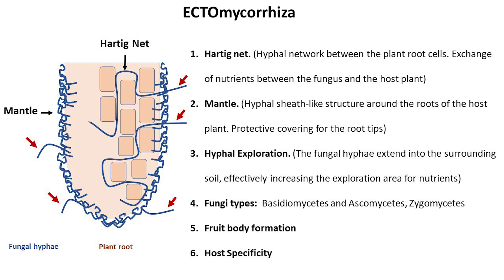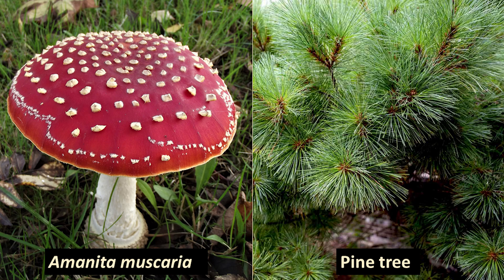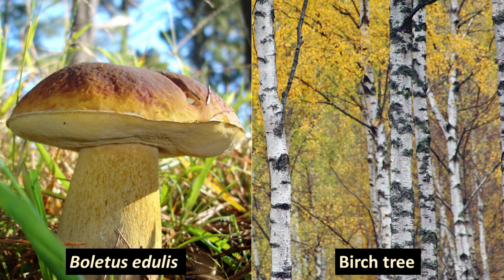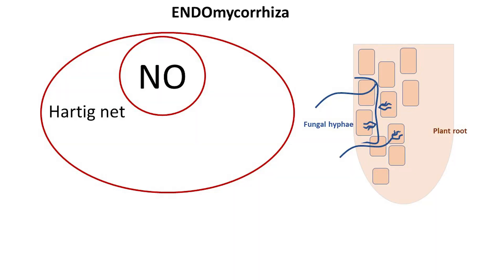Ectomycorrhizal associations often exhibit host specificity, meaning that a particular fungus may form symbiotic relationships with specific tree or plant species. For example, Amanita muscaria and pine trees, chanterelle and oak trees, Boletus edulis and birch trees. Ectomycorrhizal fungi, except in some cases, do not typically have a Hartig net and mantle.